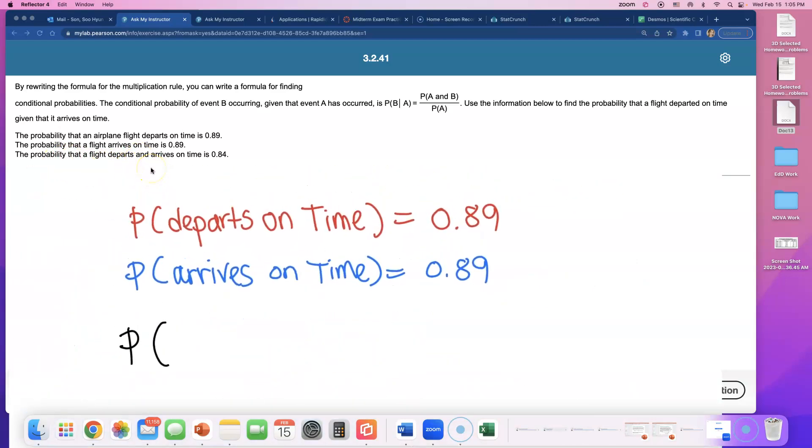Okay, what are they asking? What they want is the probability that a flight departs and arrives on time. So they're asking for both of them happening at the same time. So I'm gonna duplicate it, and probability that arrives on time. That will be the perfect situation, right? Everything is on time. And that is a little bit lower, 0.84.